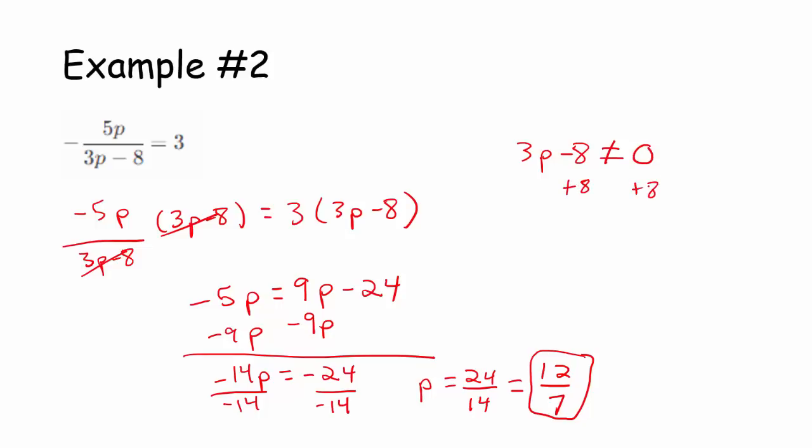Add 8 to both sides, so 3p cannot equal 8. And if you divide both sides by 3, p cannot equal 8 thirds, but that's okay because the answer that I got for p was not 8 thirds. So remember, we're just checking to make sure that that 12 sevenths does not make either side of the equation undefined.